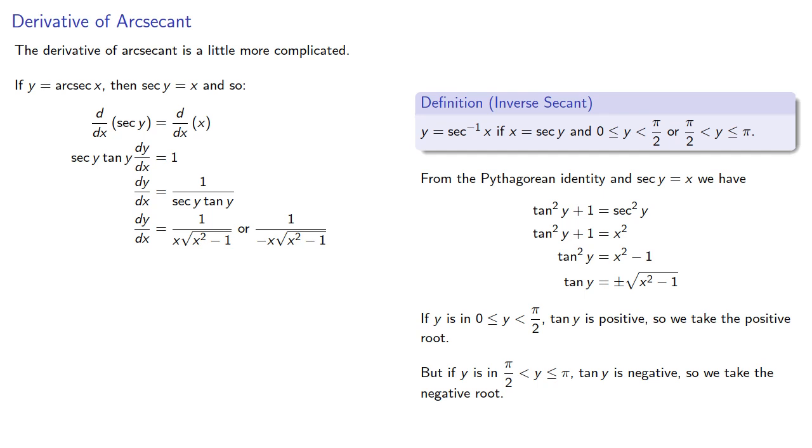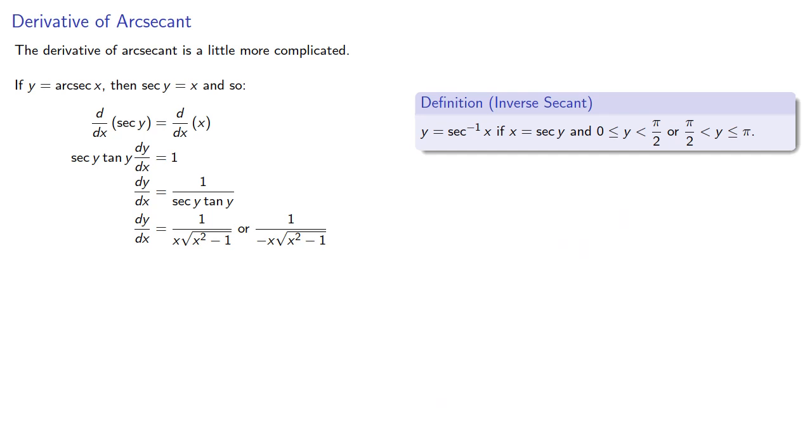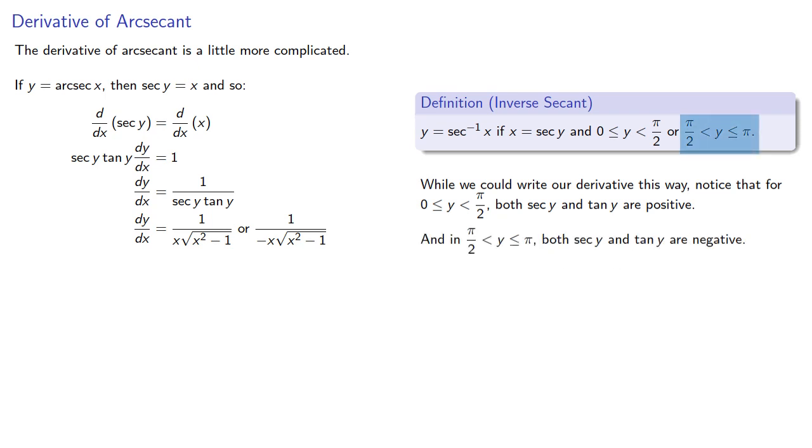Or does it? Well, no, there's only one possible derivative. And the reason is this. While we could write our derivative this way, notice that for values between 0 and pi halves, both secant y and tangent y are positive, and in the interval between pi halves and pi, both secant y and tangent y are negative.